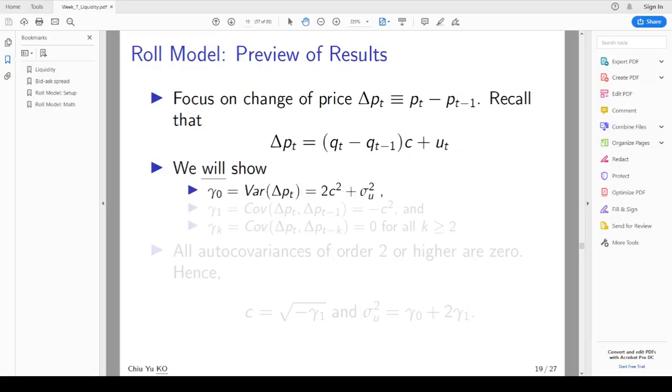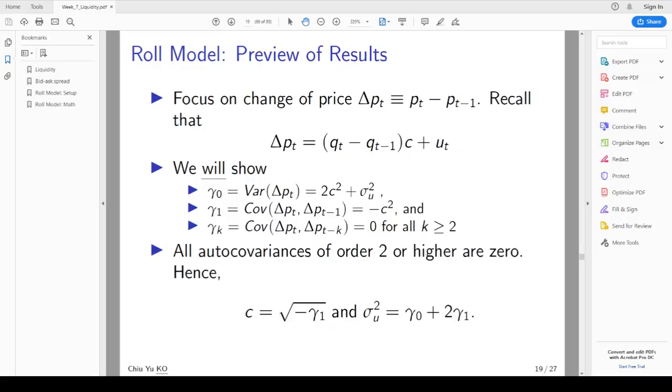We will show that the autocovariance, which is the variance of the first difference in price, equals 2 times c² plus σ²_u. And if you do the first autocovariance, which is covariance of delta P_t and its lag, will be equal to -c². And from that on, it will be all 0. That means we have c, which is the spread, equal to square root of -γ_1. And the volatility, which is σ²_u, is equal to γ_0 plus 2γ_1.